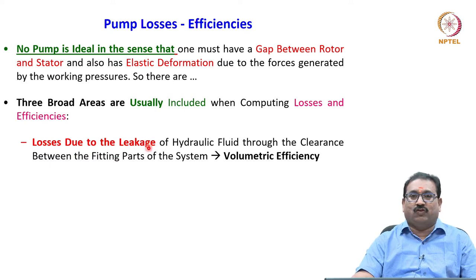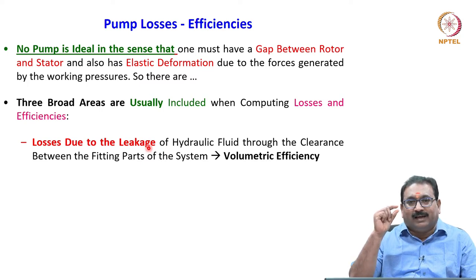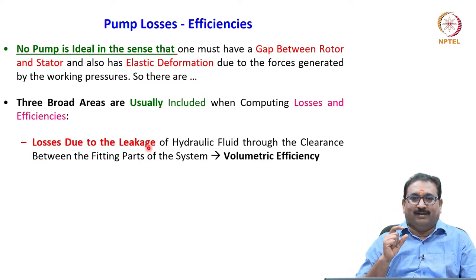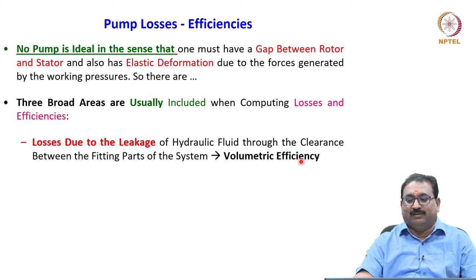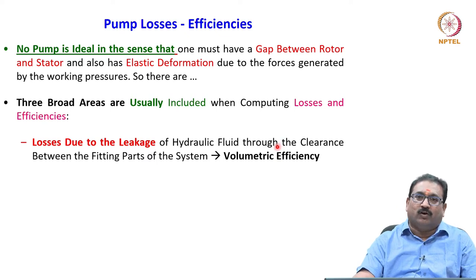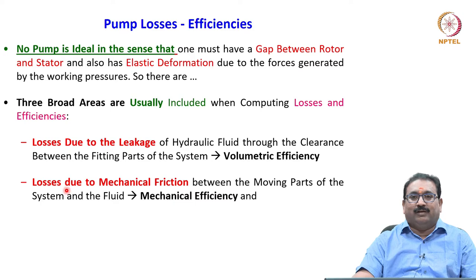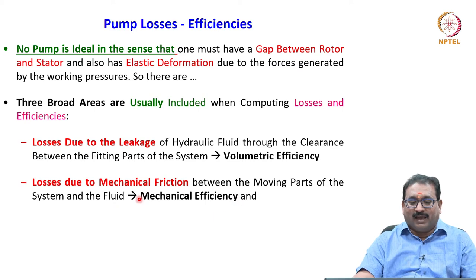The first area is losses due to leakage. Leakage occurs due to the clearance between the rotating element and the stationary element — losses due to leakage of hydraulic fluid through the clearance between the fitting parts of the system. That is what you can call volumetric efficiency. Volumetric efficiency is closely related to theoretical flow and actual flow — actual flow differs from theoretical flow. The second area is losses due to mechanical friction between the moving parts and the fluid — that is where mechanical efficiency comes into picture.